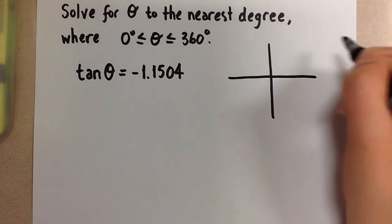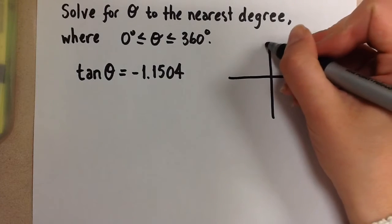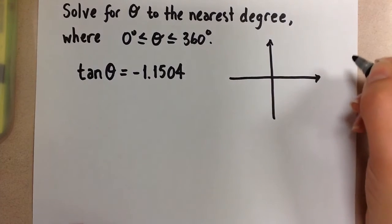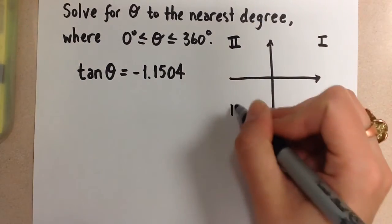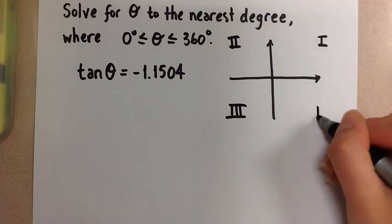If we have the Cartesian plane here, like this, our quadrants are 1, 2, 3, and 4.